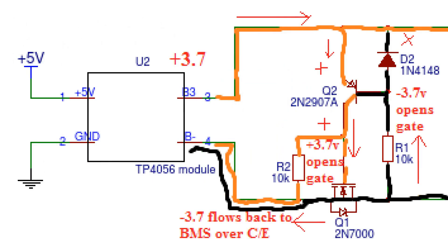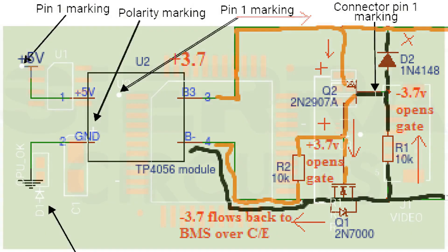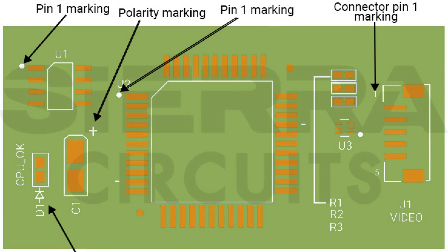Pay attention — in case of difficulty, manufacturers offer to use the online catalog to select the optimal battery model. If there are no markings on the battery, the polarity is determined using a multimeter in constant current voltage measurement mode. The black probe is connected to the suspected minus and the red probe to the plus. If the polarity is guessed correctly, the instrument will show 12V. If the polarity does not match, the voltage will show -12V.